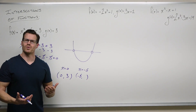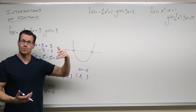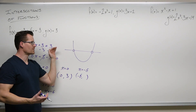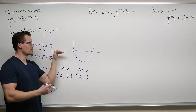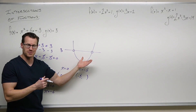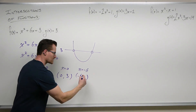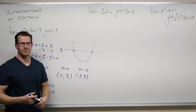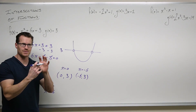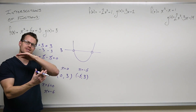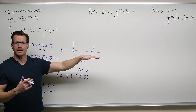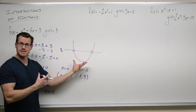So where this parabola would intersect this constant of three would have to be at a y value of three. In fact, we could just put three here. We know it's going to intersect at something comma three, because the only output of a horizontal line is three in this case.